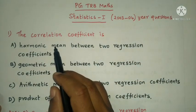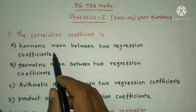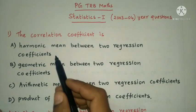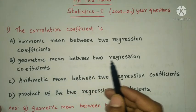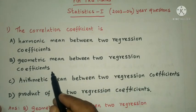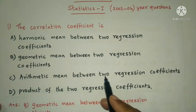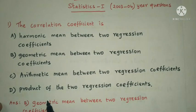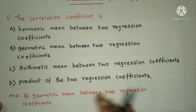First question: the correlation coefficient is — option A: harmonic mean between two regression coefficients; option B: geometric mean between two regression coefficients; option C: arithmetic mean between two regression coefficients; option D: product of two regression coefficients. The answer is option B.